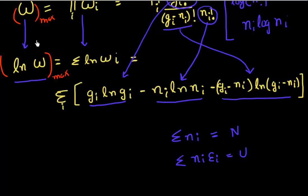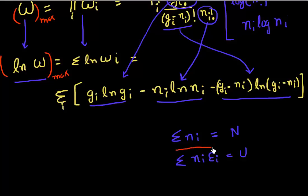We can think of it another way: the distribution which is most thermodynamically favorable is the one which maximizes the entropy, or which maximizes the total number of distributions we can have in these particles. And I want to maximize this, but I have some boundary conditions. I've been told that the total number of particles that I have is fixed — the total number of electrons is constant.